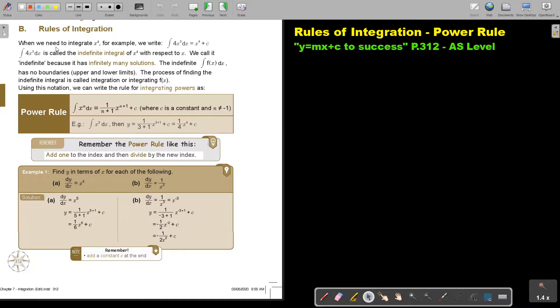When we need to integrate x to the power 4, for example, we write the integration sign, then we say 4x to the power 3 dx, and that will give you x to the power 4 plus c. This integration for x to the power 3 dx is called the indefinite integral of x to the power 4 with respect to x.